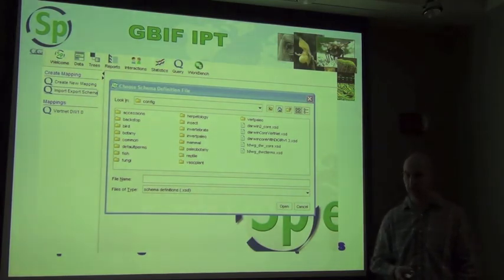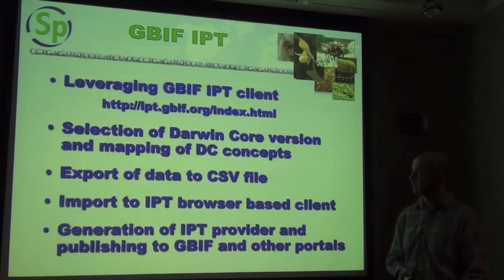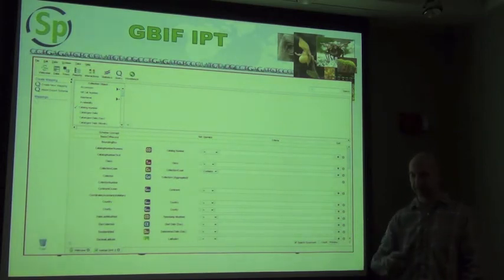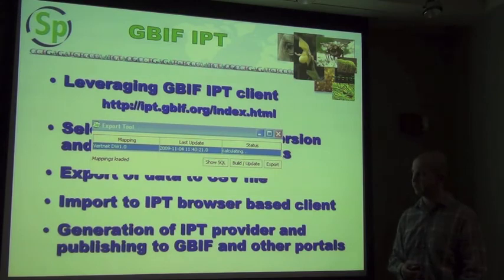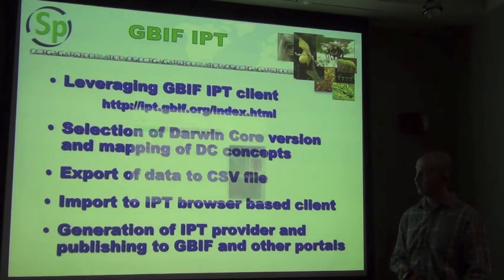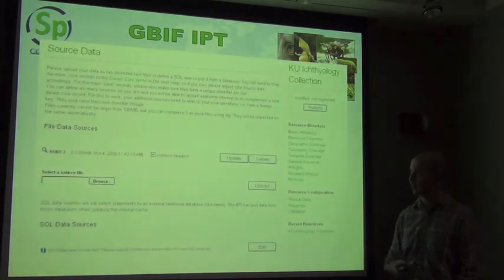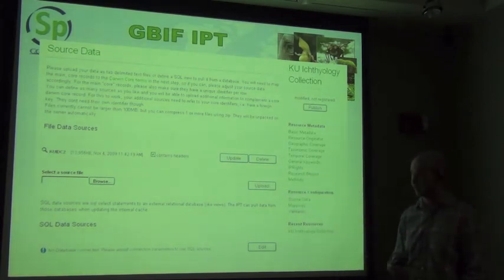We ship with five different versions of Darwin Core as XSD files. You pick which version you want to use and plug it into the system using the import schema mapper. You then map all of your terms to those Darwin Core terms — for example, mapping your catalog number field to the catalog number field in Darwin Core — which determines how your data is ported out of your collection. Once set up, you use our standalone export tool to export all your data as a CSV file, then go into the IPT web browser-based client to set yourself up as a collection and publish your data to the outside world.